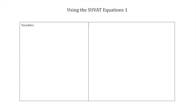Let's look at the variables S, U, V, A, and T. S is displacement. U is initial velocity. V is final velocity. A is acceleration, and T is time.